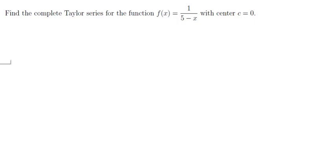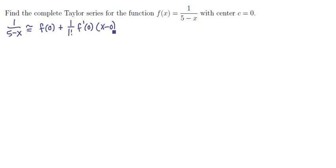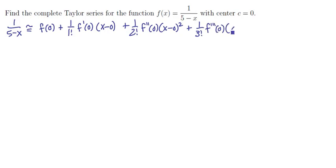We want to find the complete Taylor series for the function 1 over 5 minus x with center 0. Let's start by writing the Taylor series formula: 1 over 5 minus x equals f(0) plus 1 over 1 factorial times f'(0) times x, plus 1 over 2 factorial times f''(0) times x squared, plus 1 over 3 factorial times f'''(0) times x cubed, and so on until we find a pattern in the coefficients.